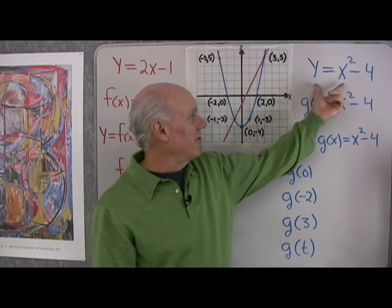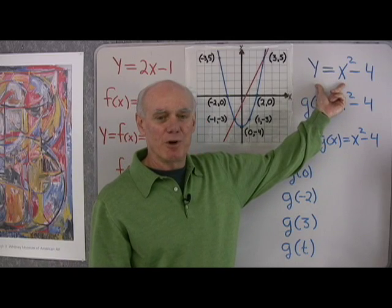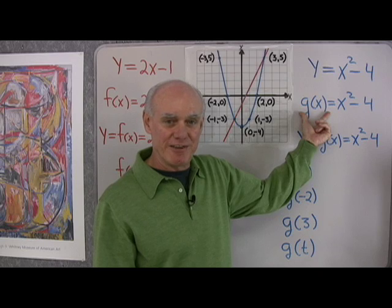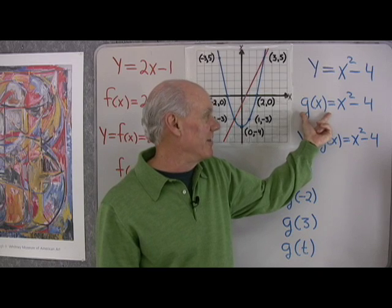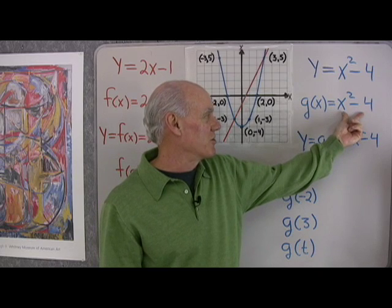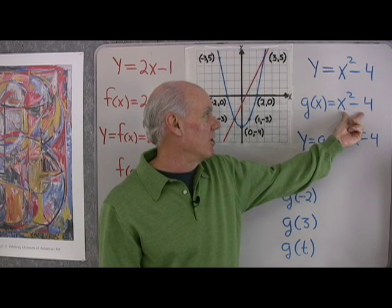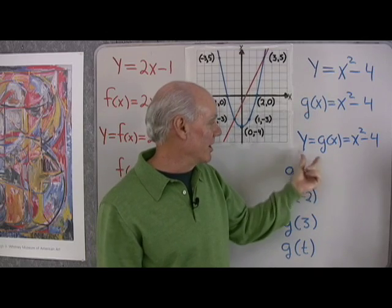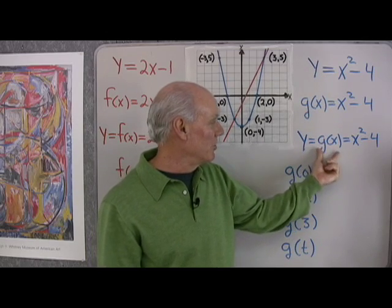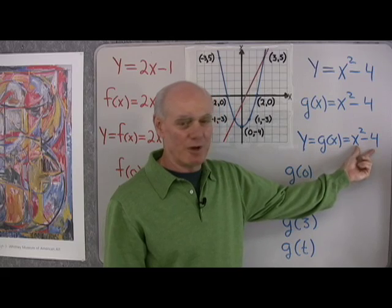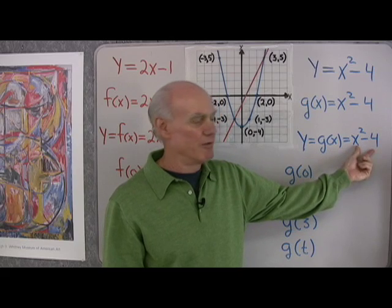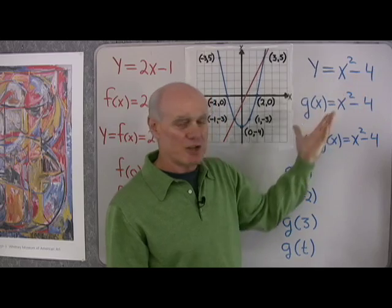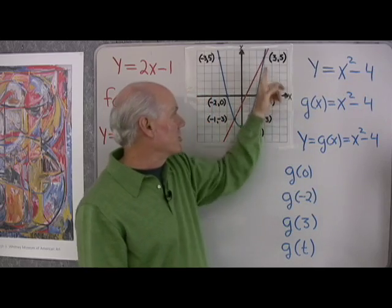Over here I've written a second function, y equals x squared minus 4. I'm calling it g of x, so g of x is equal to x squared minus 4. y and g of x represent the same thing, so I can write y equals g of x equals x squared minus 4. Notice y equals x squared minus 4 is a quadratic function.